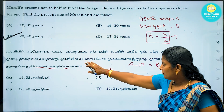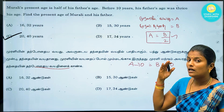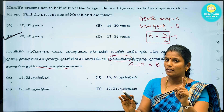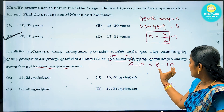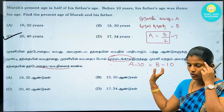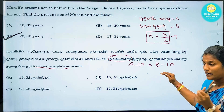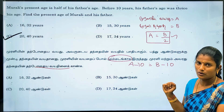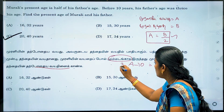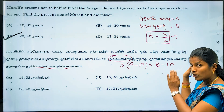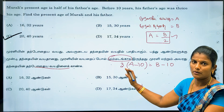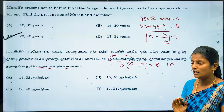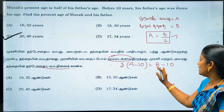Now we have to do three times as a multiple. Look at what you have to do. The present age condition gives us the second equation. Now we have to do three times equal. So 3 of A minus 10 equals B minus 10. Those are the two equations.